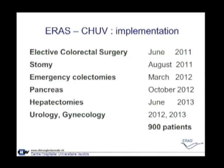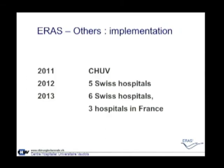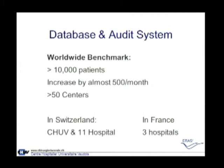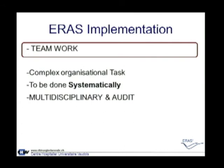For our own hospital, we have around 900 patients in the database. Implementation expanded in 2012 to five Swiss teaching hospitals, in 2013 to six Swiss hospitals and three hospitals in France — three academic centers with whom we have good relationships. The audit system database now has more than 10,000 patients across the entire system, increasing by almost 500 cases every month, with more than 50 centers.